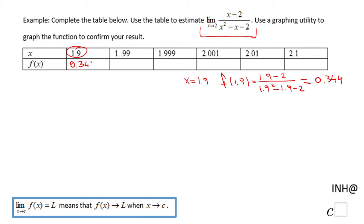Similarly, you can do 1.99 and you're gonna get 0.334, and then 1.999 I end up with 0.333.